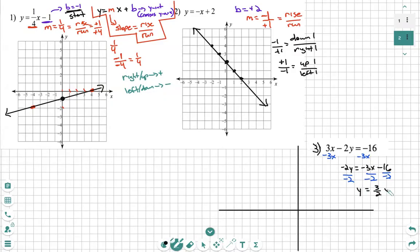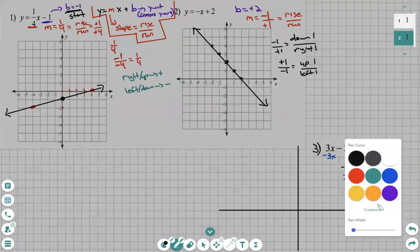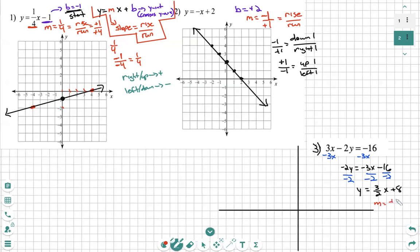We see we have a fraction in front of my x of plus eight. Now I am in y equals mx plus b form. My m is positive three over positive two. My b is positive eight. So let's move this down so we have some room. Let's go find our b.